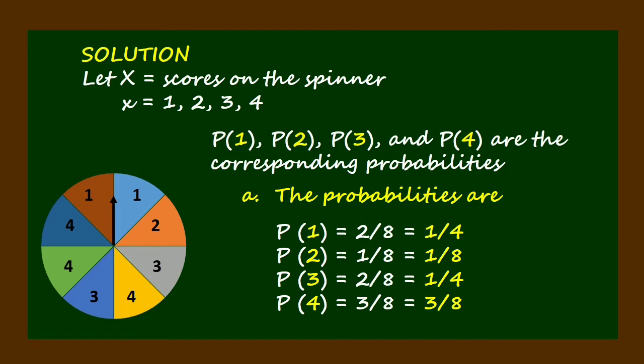How did we obtain these values of the probabilities? For P(1), notice that there are two parts of 1 out of 8 parts, so we have 2 over 8, or 1 fourth. For P(2), there is only one part containing 2 out of 8 parts, so we have 1 over 8, or 1 eighth. For P(3), there are likewise two parts of 3 out of 8 parts, so we have 2 over 8, or 1 fourth. And for P(4), there are 3 parts of 4 out of 8 parts, so we have 3 over 8, or 3 eighths.